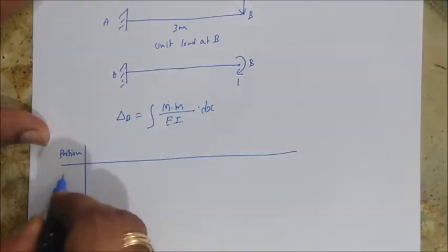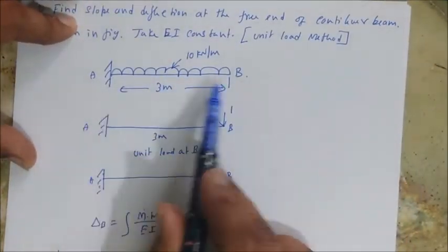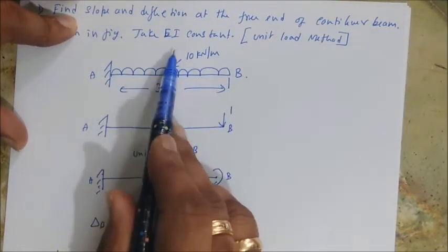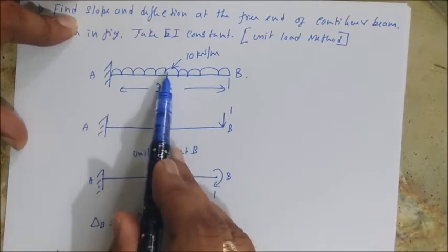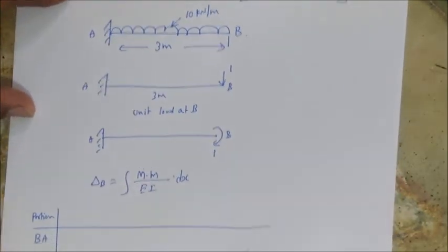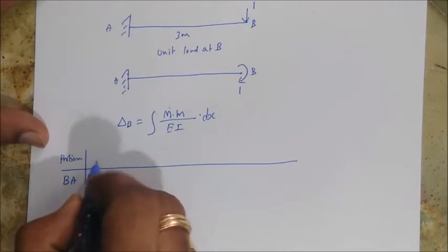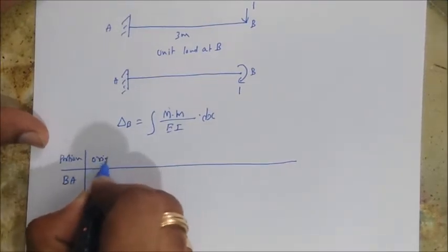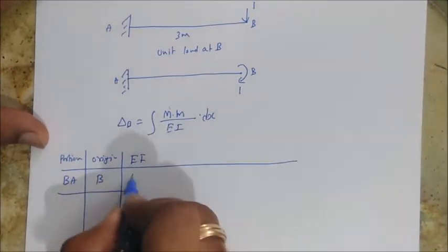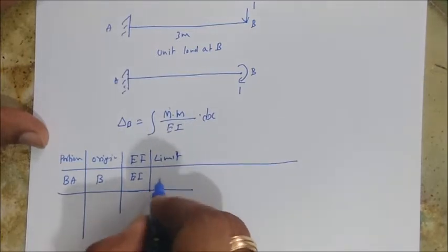Portion: I'll be going with a single region here. Since it is UDL, single equation is applicable from B to A. I'll directly use single span here. If I am having a point load here, we would need to split it wherever we have a point load. Procedure is same like strain energy or even Castigliano's theorem. Now let's go for this portion BA. Origin is B. EI is there, no change. Integration range limit, I'll apply the limit here, so it is 0 to 3.